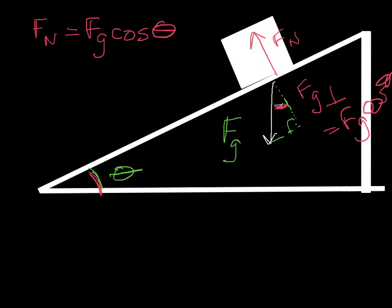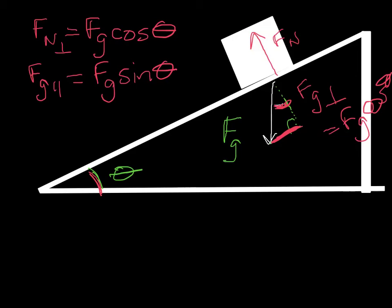The parallel component of our force is opposite the angle. We call that FG parallel, and that is equal to the force of gravity times the sine of the angle. So the perpendicular force uses cosine and the parallel force uses sine — which is kind of opposite to what we did for X and Y components. When we had X and Y, the Y was the sine and the X was the cosine. On an inclined plane, it is pretty much backwards from that.